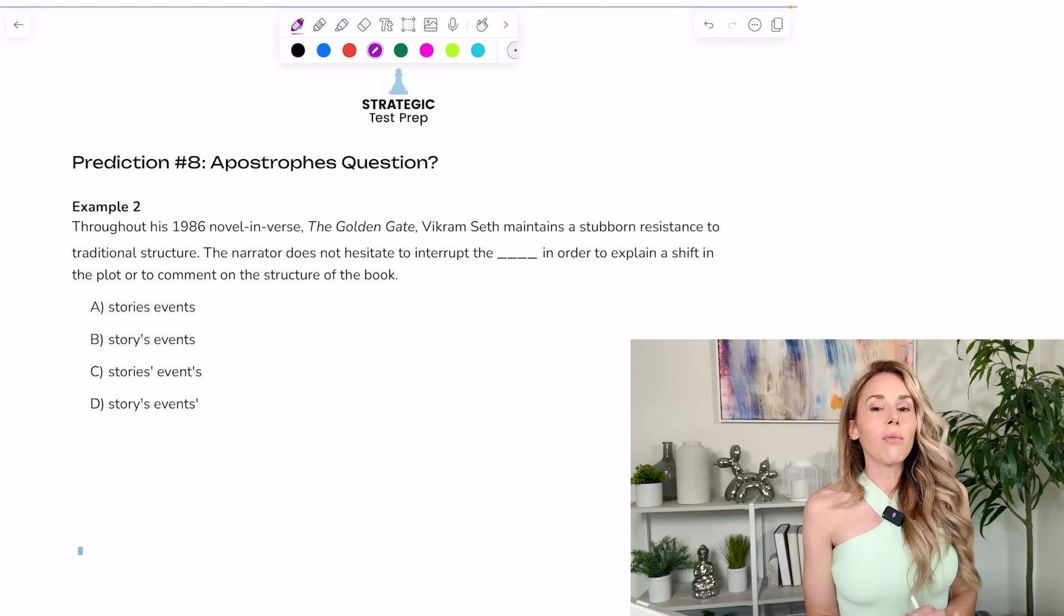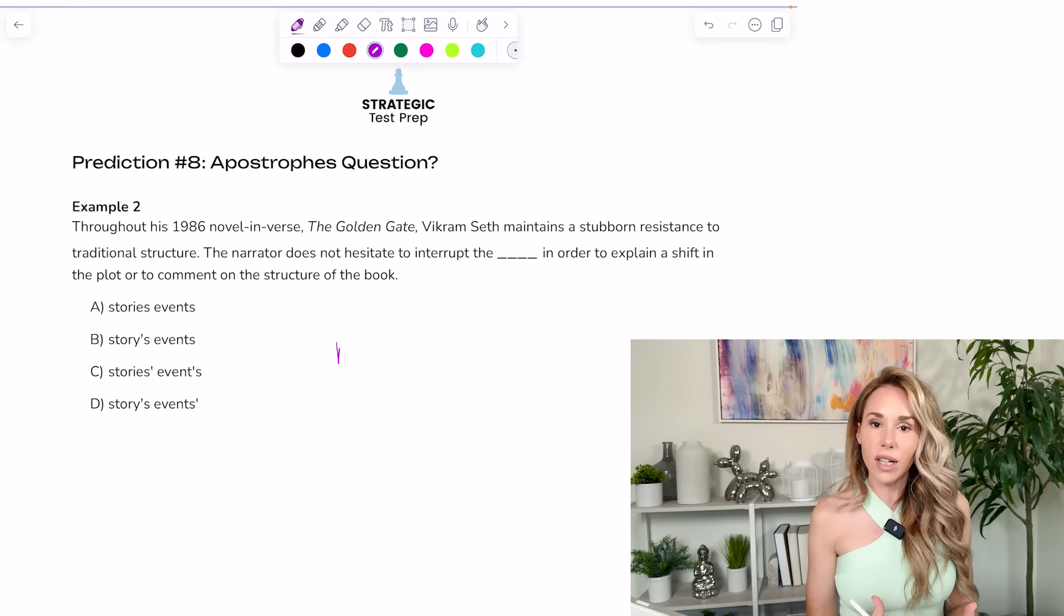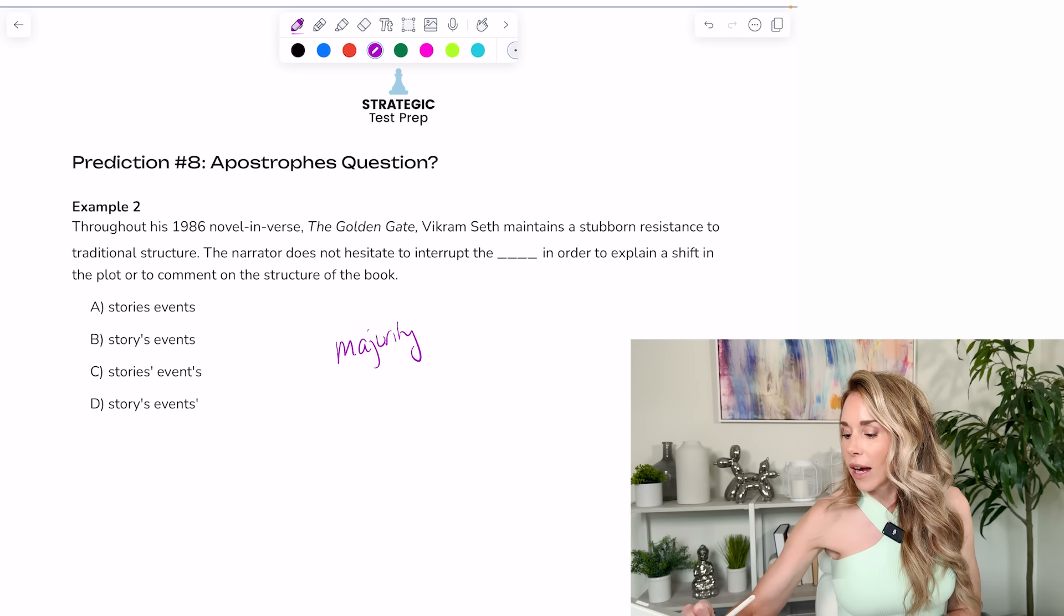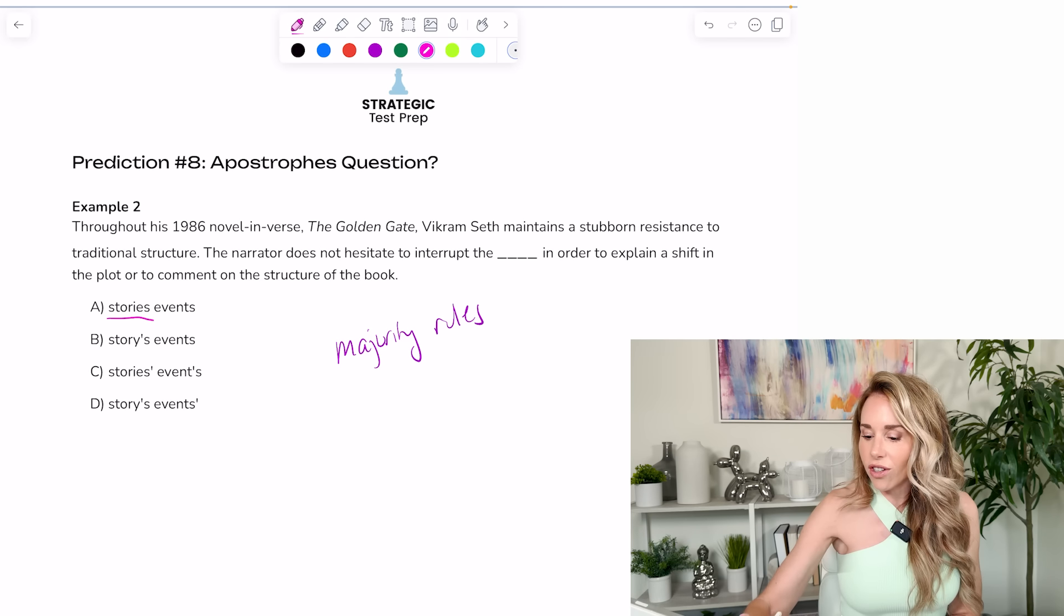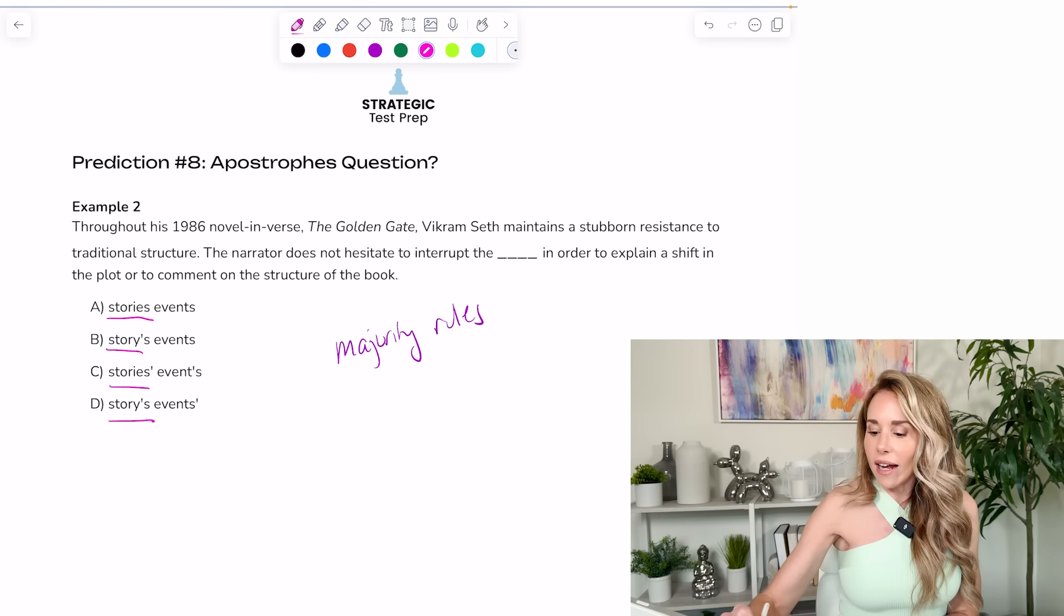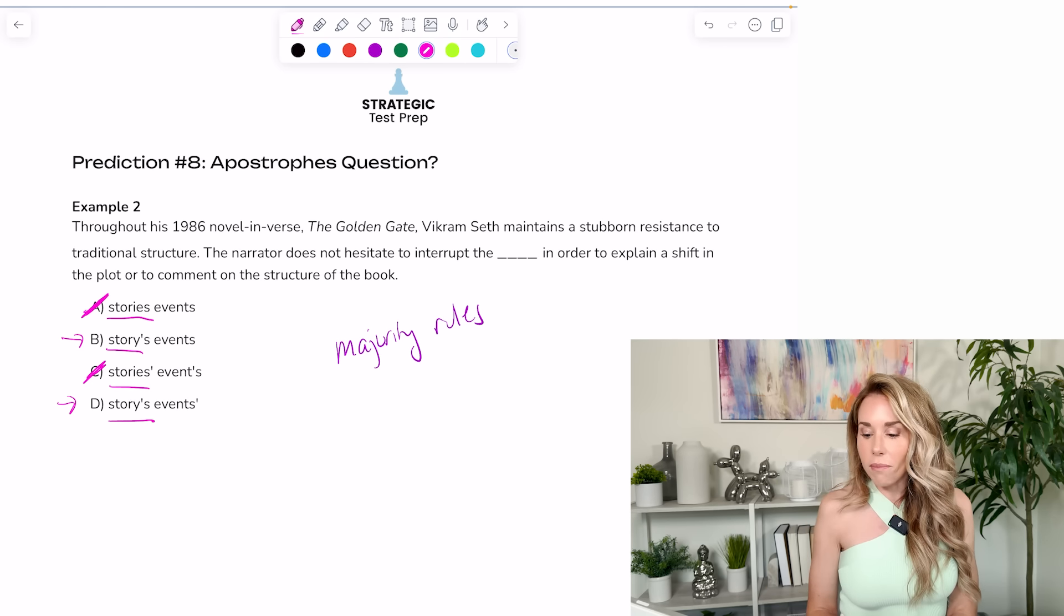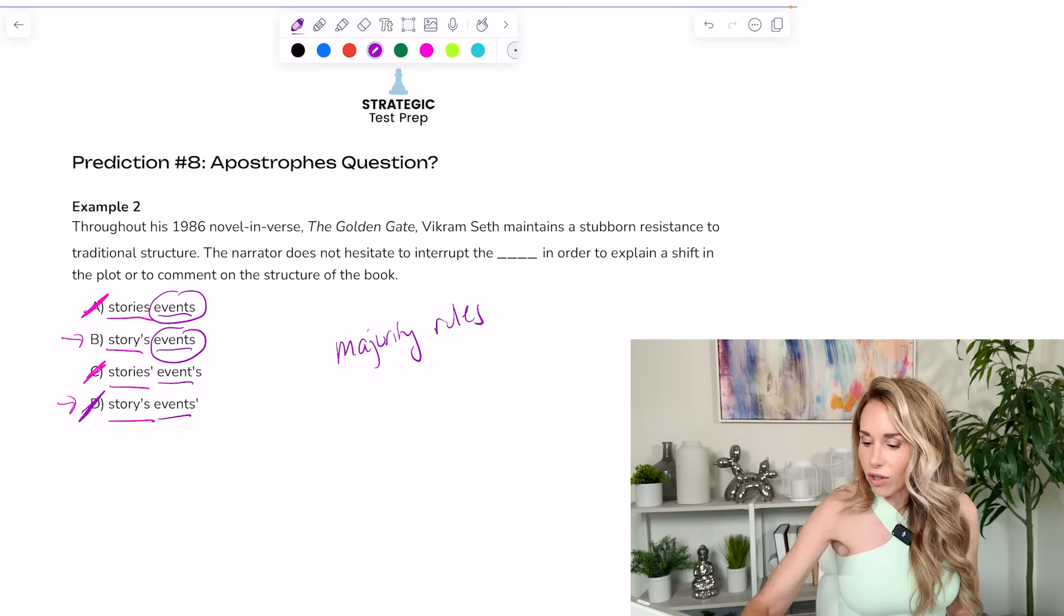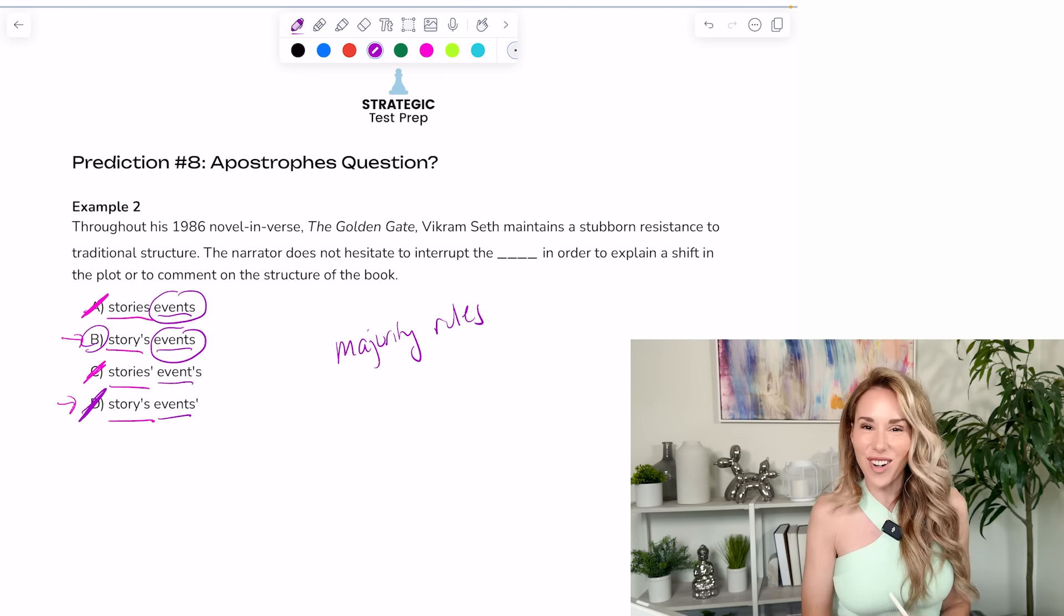My eighth prediction is I think they will give you a question testing apostrophe placement. And I know sometimes this really confuses students. So I would say play majority rules. And you can get the answer pretty much every time. So I'm going to look at the variations of stories first. And I noticed these two are the same and these two are different. So I'm going to stick with B and D. And then I'm going to look at all the events. And I noticed that these two are the same. And those two are different. So B has the most in common with the other answer choices. And it is the correct answer.